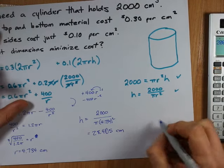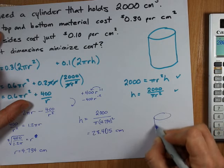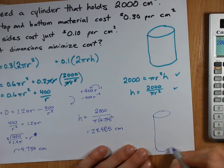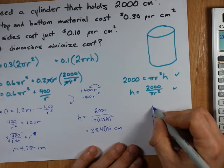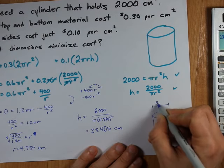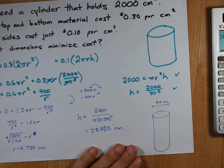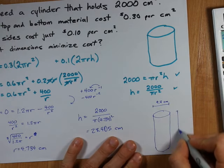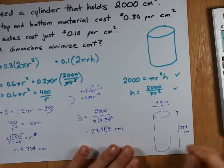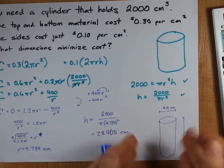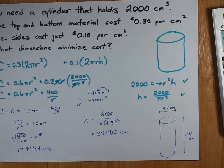Cool! So, what I've solved for here is the fact that we want a cylinder that's very tall. The radius is only 4.7 centimeters. So the diameter is only 9.4 centimeters. And the total height is 28.4 centimeters. It is much taller than it was wide, because the sides are cheaper to make than the top and bottom.